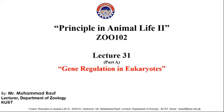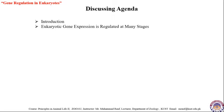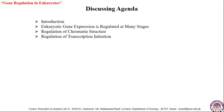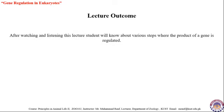Assalamu alaikum dear students, I am Muhammad Raouf, lecture department of zoology. Welcome to the course Principles in Animal Life 2, lecture number 31. The topic is gene regulation in eukaryotes. The agenda will cover introduction, eukaryotic gene expression regulated at many stages, regulation of chromatin structure, regulation of transcription initiation, and mechanisms of post-transcriptional regulation. After watching this lecture, students will know about various steps where the product of a gene is regulated.